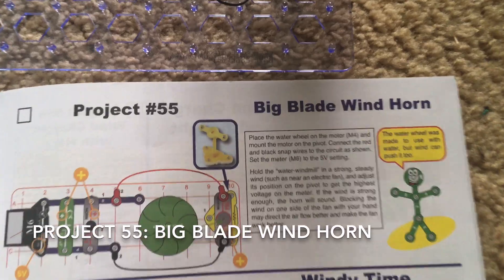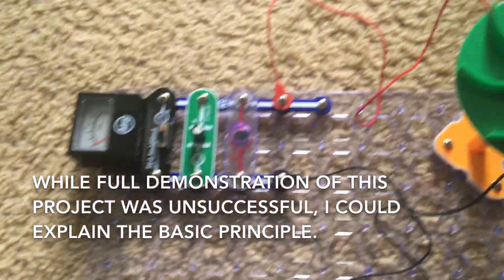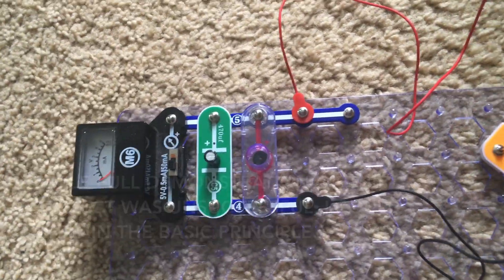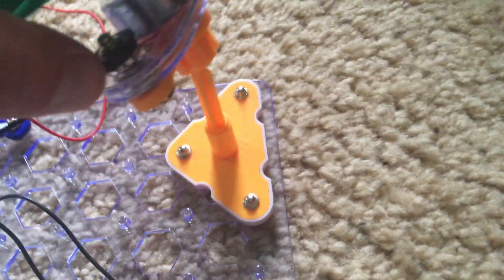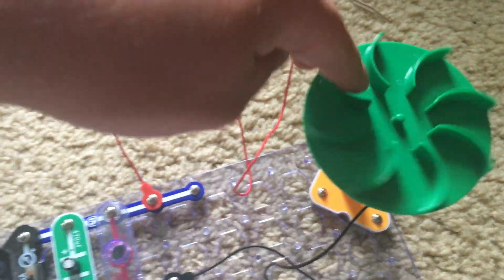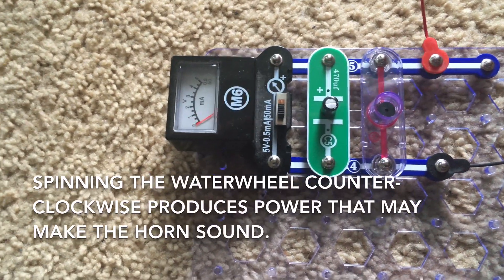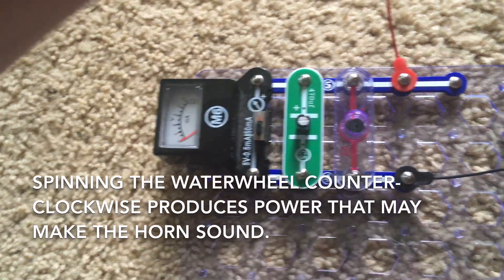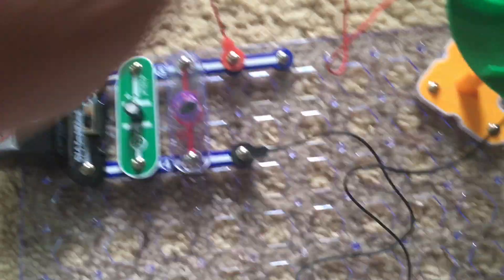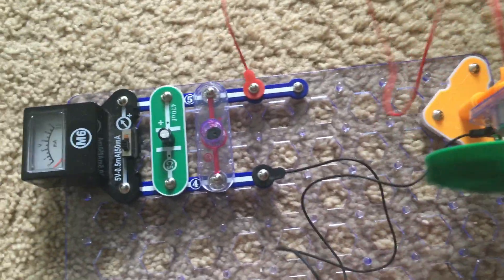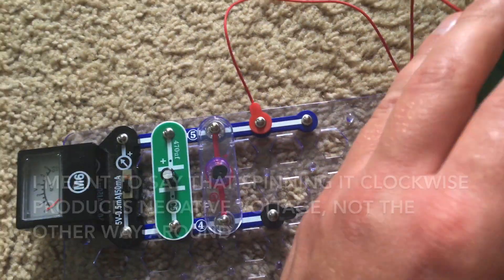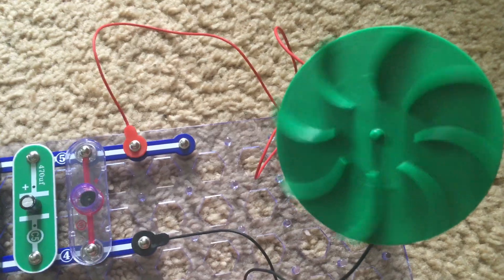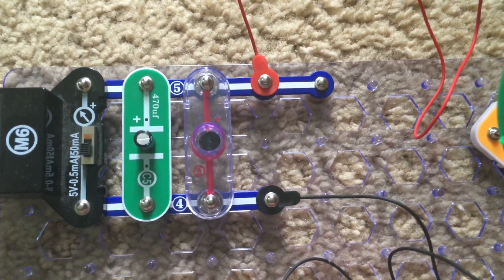Project 55 is big blade wind horn. However, I was not able to successfully work this project, but I will tell you the principle. With the meter set to the 5 volt setting and the motor on the pivot point with the water mill attached, you would spin the blade counterclockwise and you'll see that the voltage meter increases, but the horn should sound. It does not when I try it. Spinning it counterclockwise produces negative voltage, which the meter cannot record.